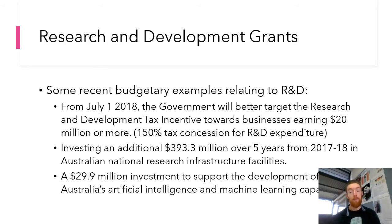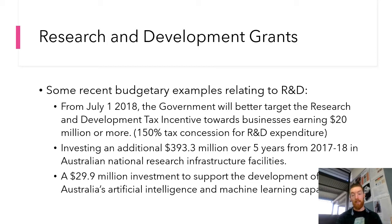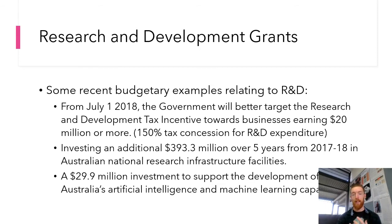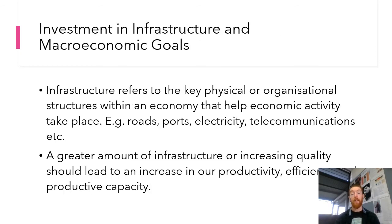Recent examples related to research and development: from July 1, 2018, the government better targeted the R&D tax incentive towards businesses earning $20 million or more, allowing more businesses to claim that 150% tax concession. The government is also investing an additional $393.3 million over five years from 2017-18 in Australia's national research infrastructure facilities. There is also a $29.9 million investment to support the development of Australia's artificial intelligence and machine learning capabilities, positioning us at the forefront of robotics and AI to drive greater production, efficiency, and aggregate supply.